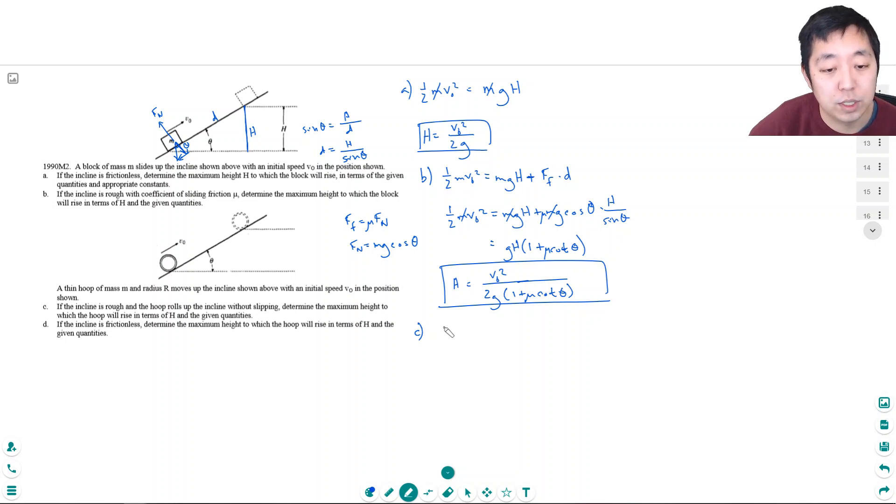One thing you're going to have to know, which you used to have to know, is I is equal to... I think these are from the physics C exam, so that's why you would have to know it. I in this case I'll give to you, which is probably why you wouldn't have been able to do this on your own. mr squared. Is it one half? No. There's no one half if it's a ring, it's just mr squared for a loop.